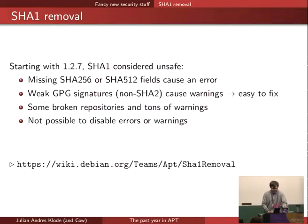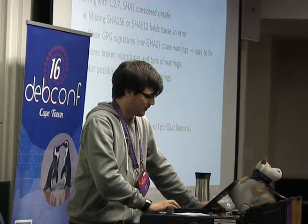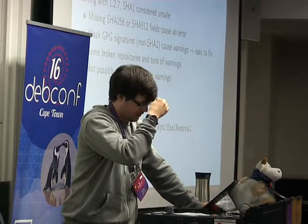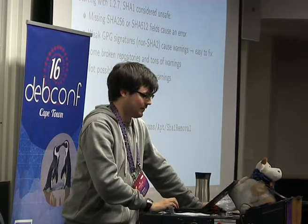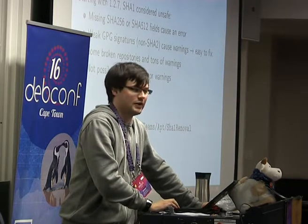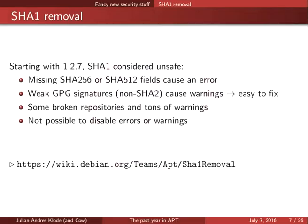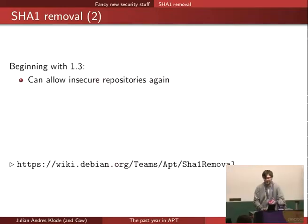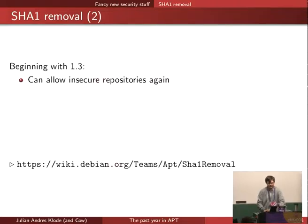One thing a lot of users complained about — and I think it's a good thing that they complain about, but it's not very easy to fix — is we can't disable the errors or warnings right now. It's not really possible to fetch repositories that miss SHA2 fields because apt will just error out. But that might be fixed in 1.3, so you can say you want to allow this repository to have an SHA1 key — for example, if you go to archive an old snapshot from Debian for historical reasons.